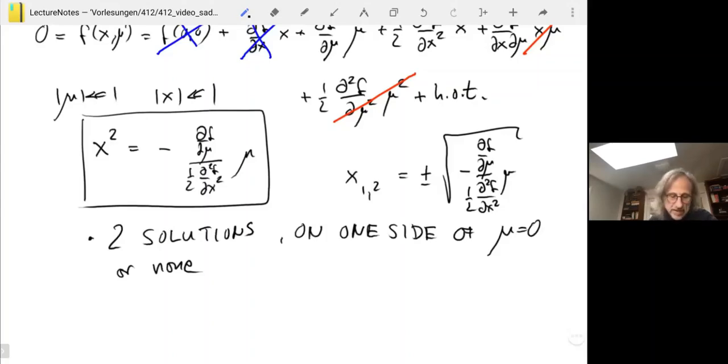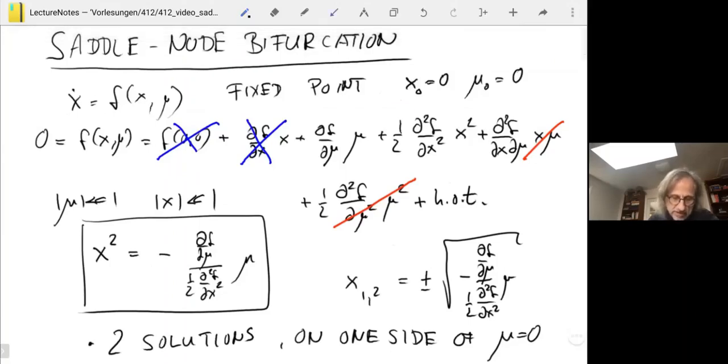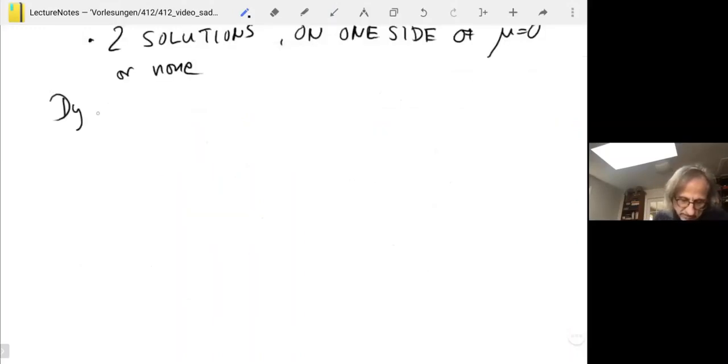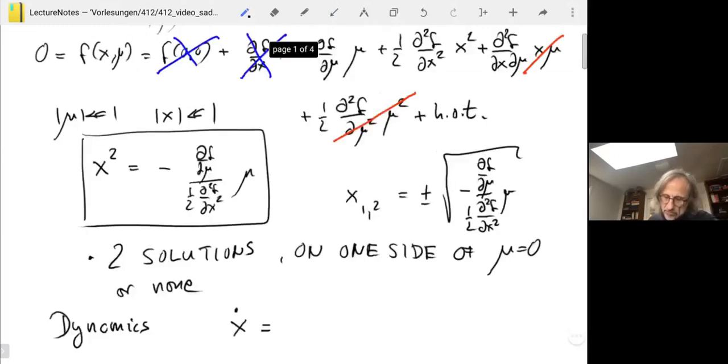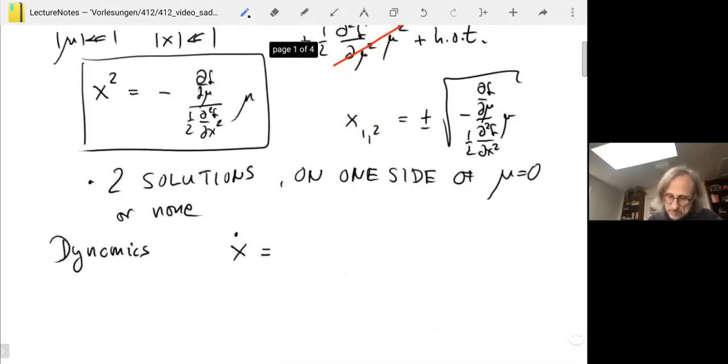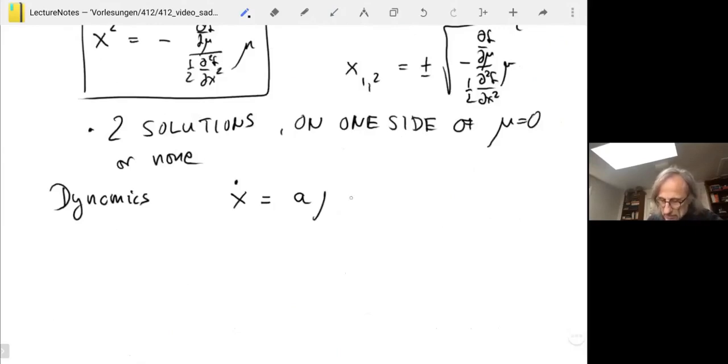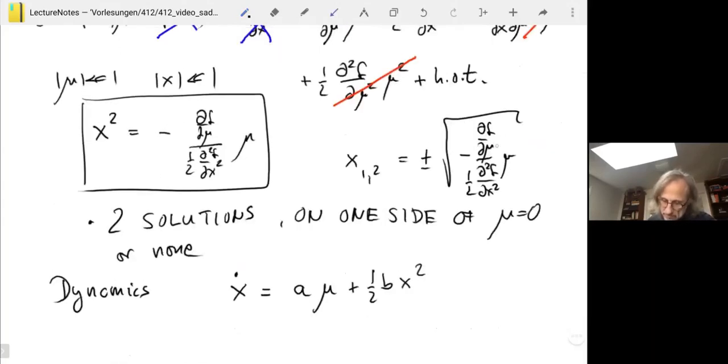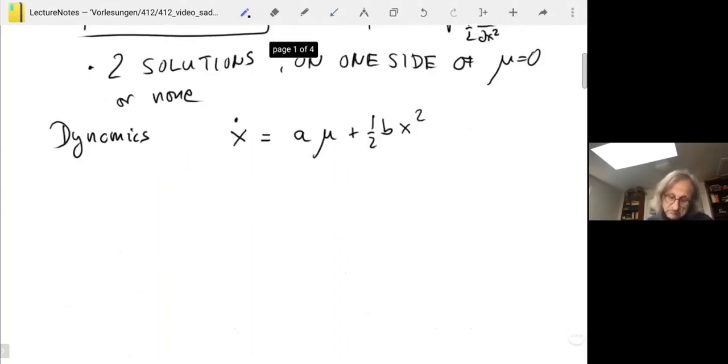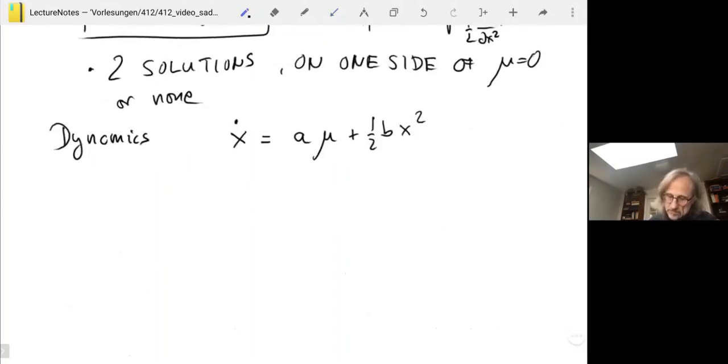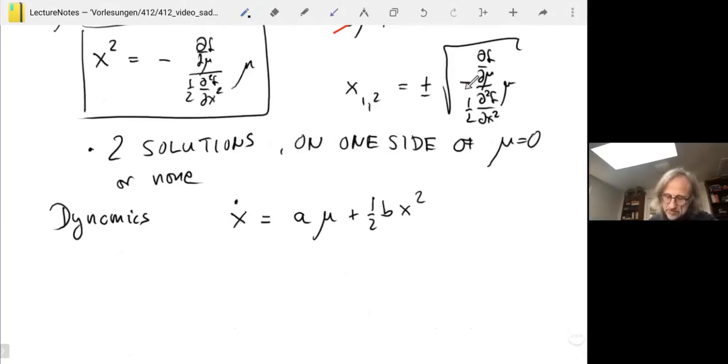The other thing we see is that the change in x with mu is not smooth because the square root is not a smooth function. It has a singularity at the radicant equals zero. So that's what happens when the implicit function theorem doesn't hold. We have two solutions. We'd like to know their stability. We need to go back to our original equation and plug in our expansion for f. So we get x dot equals f. We have a term in mu and a term in x squared. Let's say this is a times mu plus one half b times x squared, where a and b are these coefficients.